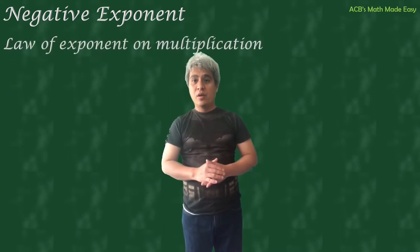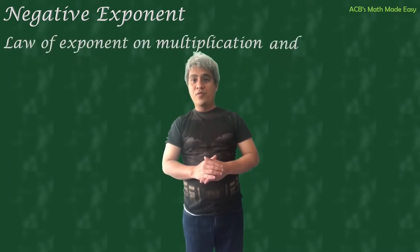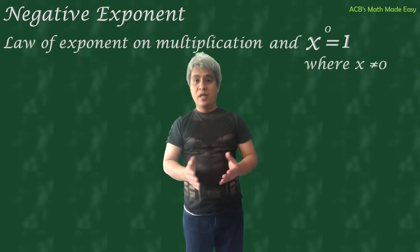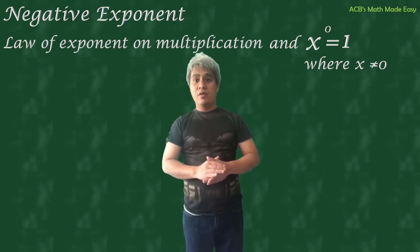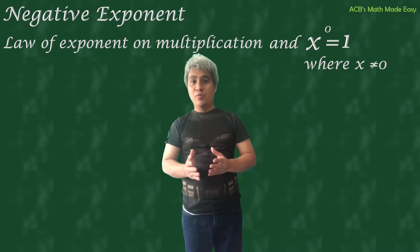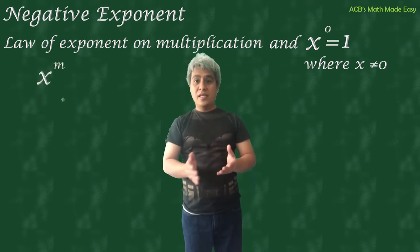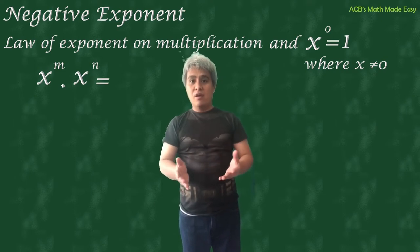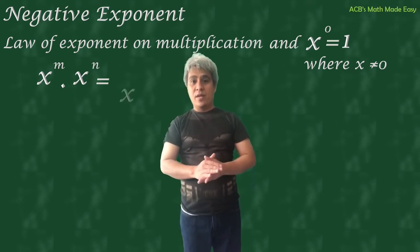But before we can prove the negative exponent, we have to prove first the law of exponent on multiplication, and that x raised to 0 is equal to 1. The law of exponent on multiplication states: x raised to m times x raised to n equals x raised to m plus n.